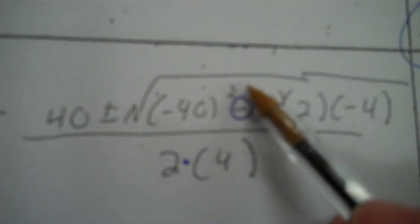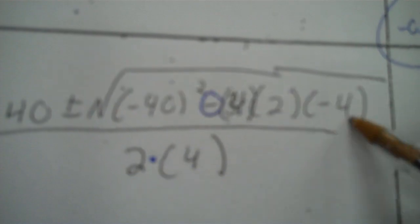Next problem. It becomes a robotic process. You have 40 in front. On the bottom, 2 times 4 is 8. Now I make a square root with that minus sign dead center. So in front of the minus, we have negative 40 to the second power — that means negative 40 times negative 40. And then behind the minus, we have 4 times 2 times negative 4.